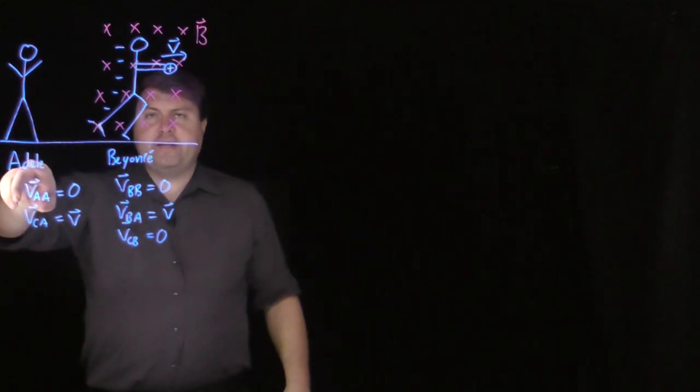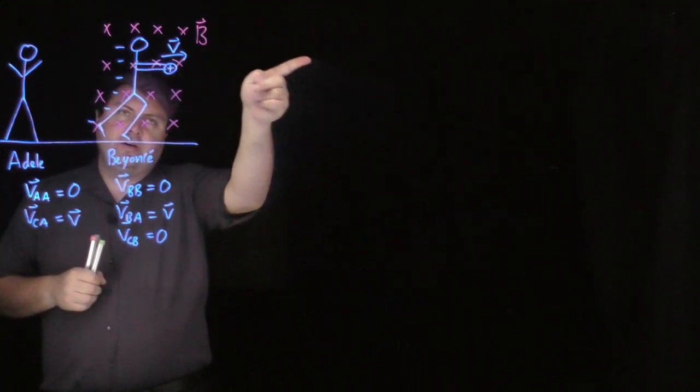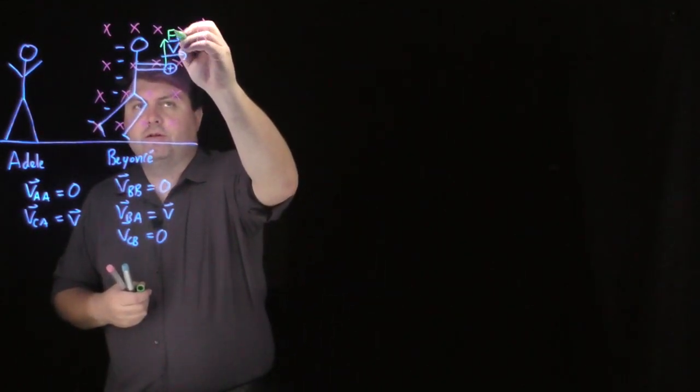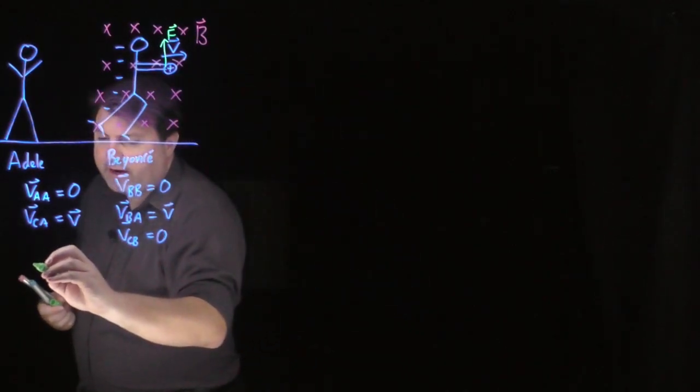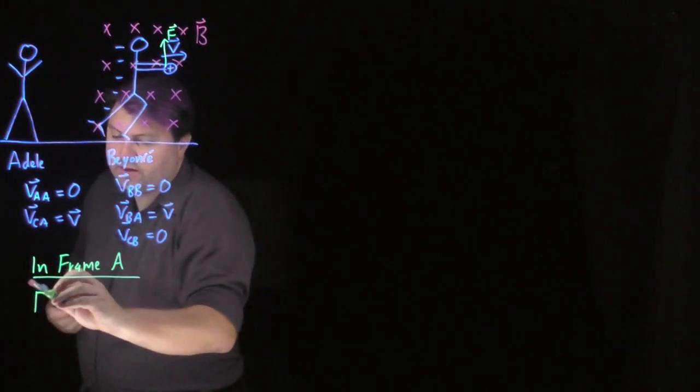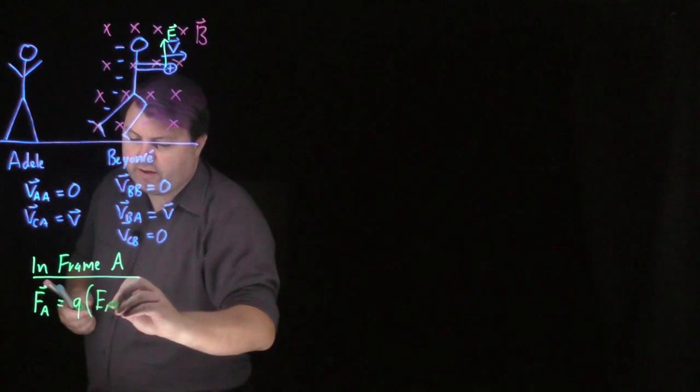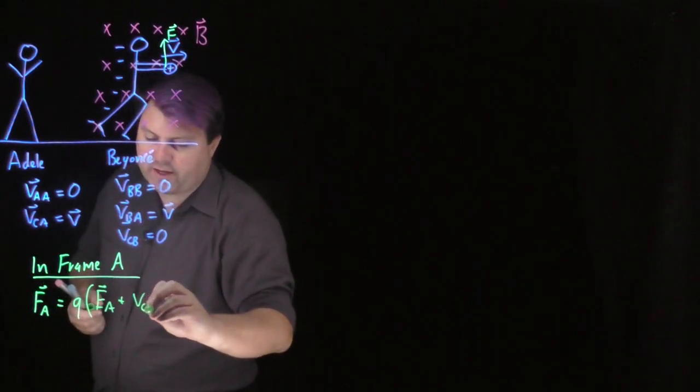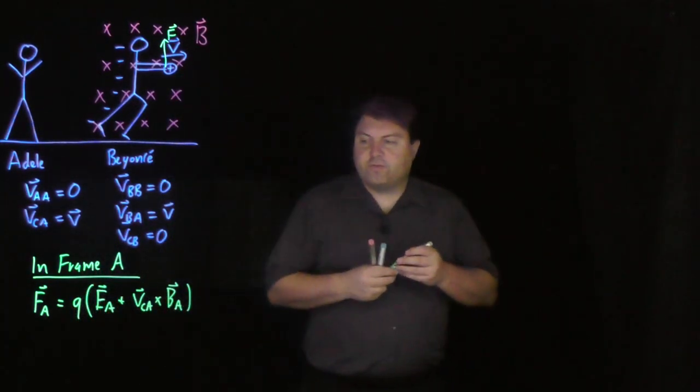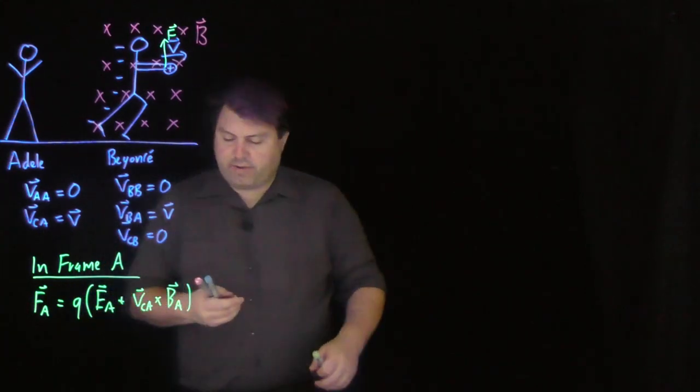So for Adele, we see a charge moving in a magnetic field. So we can do QV cross B would give us a force pointing upwards. And so we can say in frame A, the force in frame A is going to be the charge times the electric field in A plus the velocity of the charge in A crossed with the magnetic field in A. This is our Lorentz force where we've combined Q times E as the electric force and QV cross B as the magnetic force.